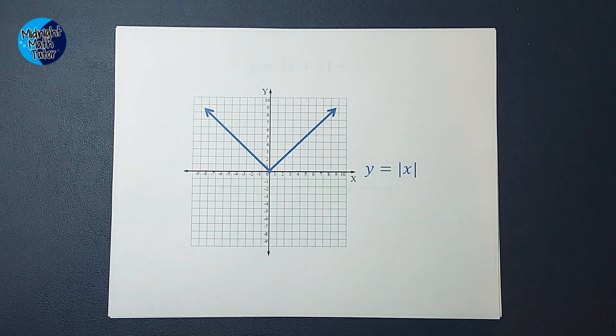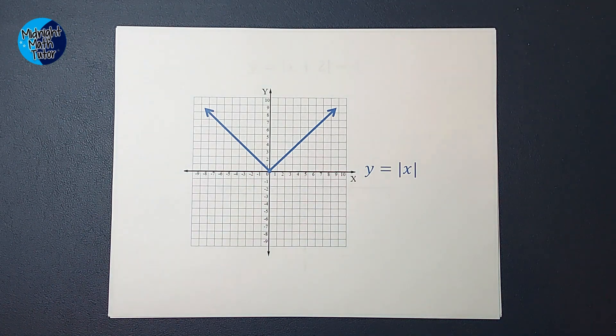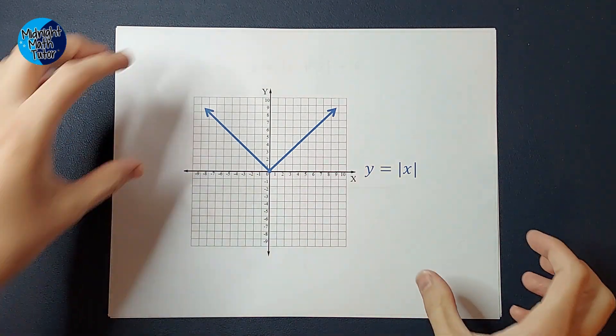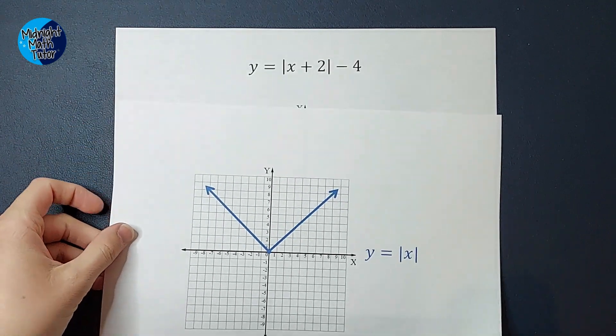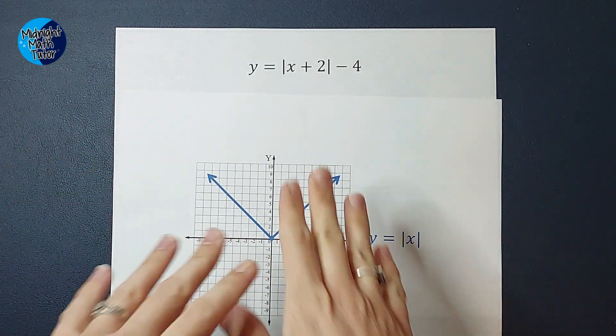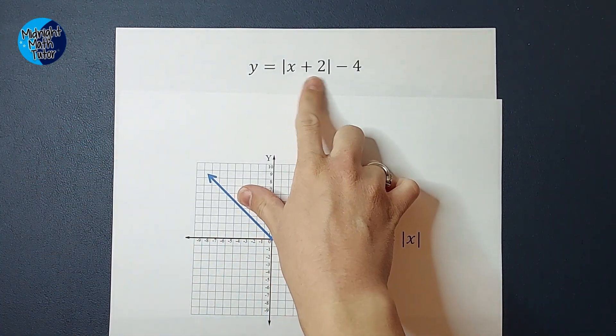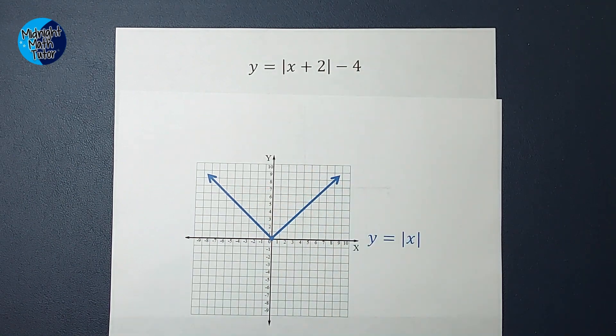If you were just being asked to graph y equals the absolute value of x, this is what your graph would look like. But you're like internet math lady, that's not what I'm being asked to graph. I'm being asked to graph something like this. There might be something being added or subtracted inside the bars, added or subtracted on the back.